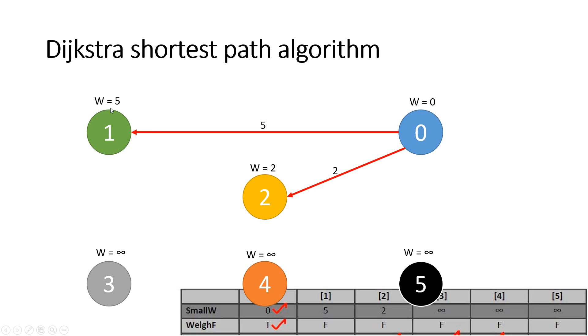So the next shortest weight or the minimal weight after 0 is going to be 2. So we fill in our table here and we're saying that we've got a small weight of 0, 5, and 2, and the other weights are all infinity which is 3, 4, and 5.